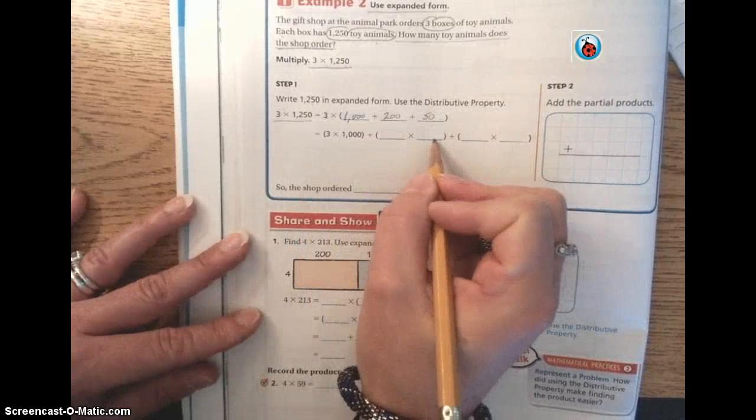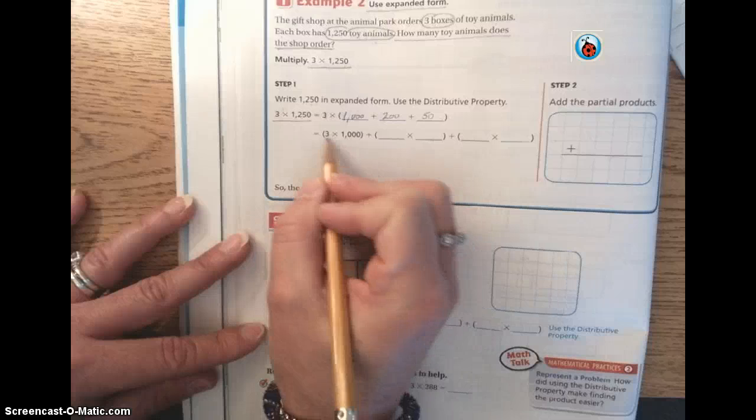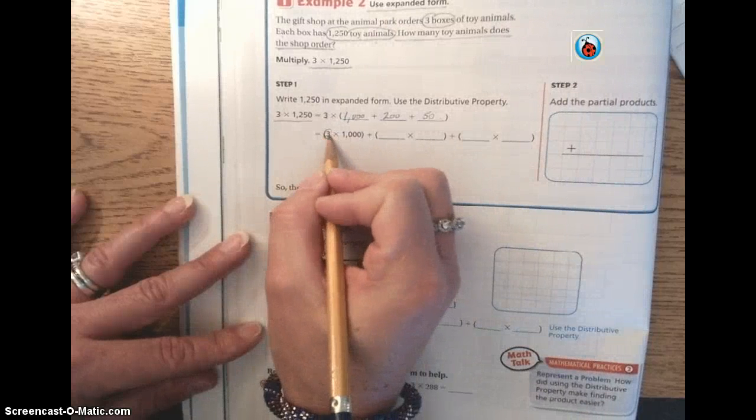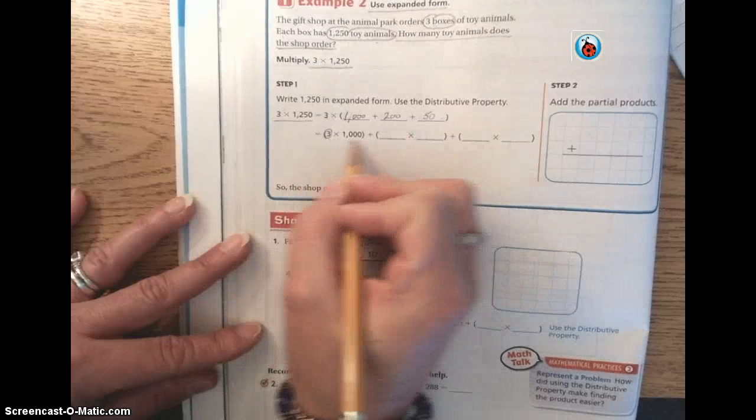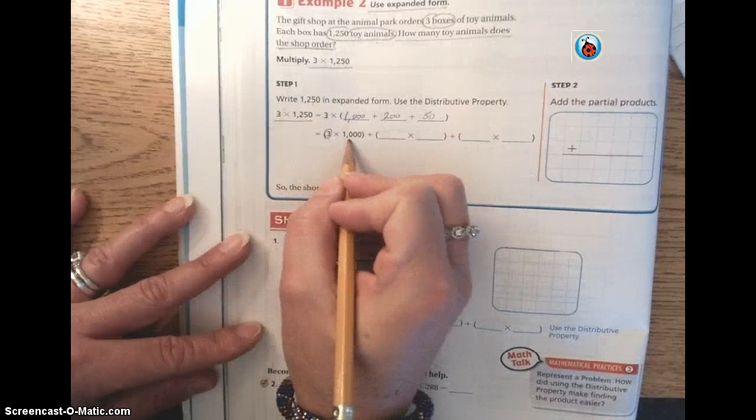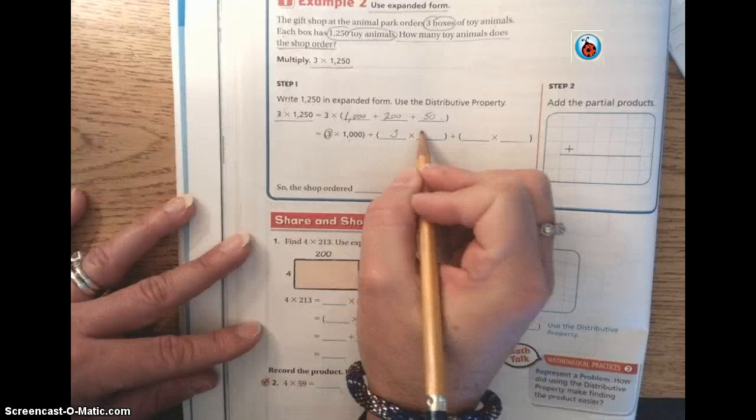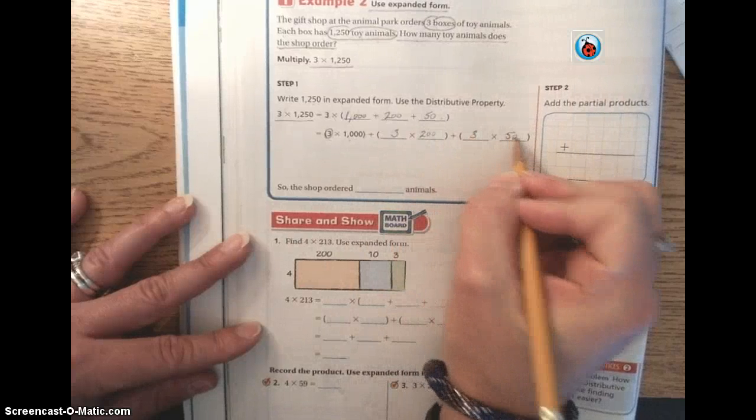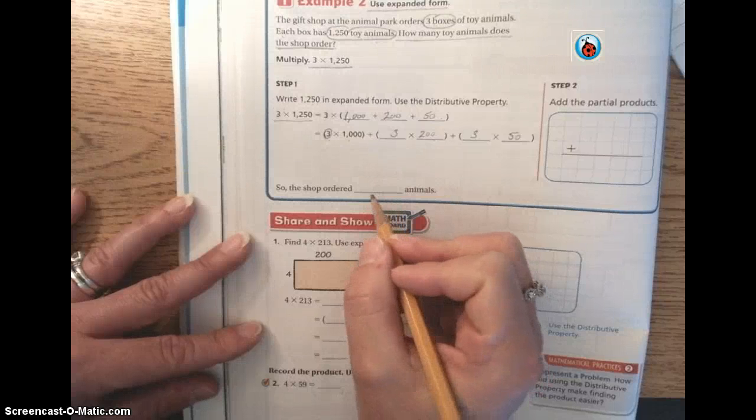Then our next step in the distributive property method is to break it into separate addition problems where you've taken the single factor, and you're going to multiply by each one of those. So the three times 1,000 is already done for us. Now we have three times 200, and we have three times 50. Very similar to the distributive property.